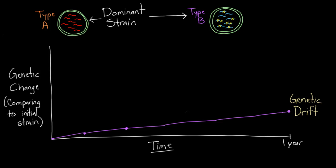Now you go to the orange community — the orange county — to do the exact same thing with their type A influenza virus. In the beginning, of course, it's not any different. But coming back a little later, you notice it has had a couple of changes, a few mutations, just like before. So far so good — it looks like it's changed a little. Then there's one more mutation on another trip, so it's changed a bit further.